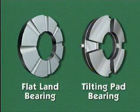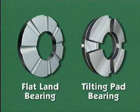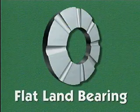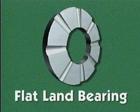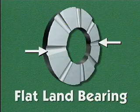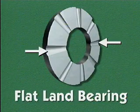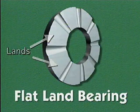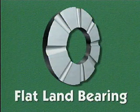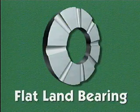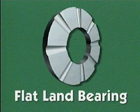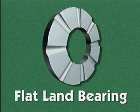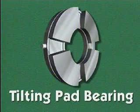There are two general types of thrust bearings: flat land bearings and tilting pad bearings. Flat land bearings are made of a single flat disc with no moving parts. The surface of the disc has grooves cut in a radial direction across the surface. The grooves divide the surface into sections called lands. Lubricant flows between the bearing and the thrust collar along the grooves. As the thrust collar turns against the bearing, lubricant in the grooves is distributed over the contact surface of the bearing.